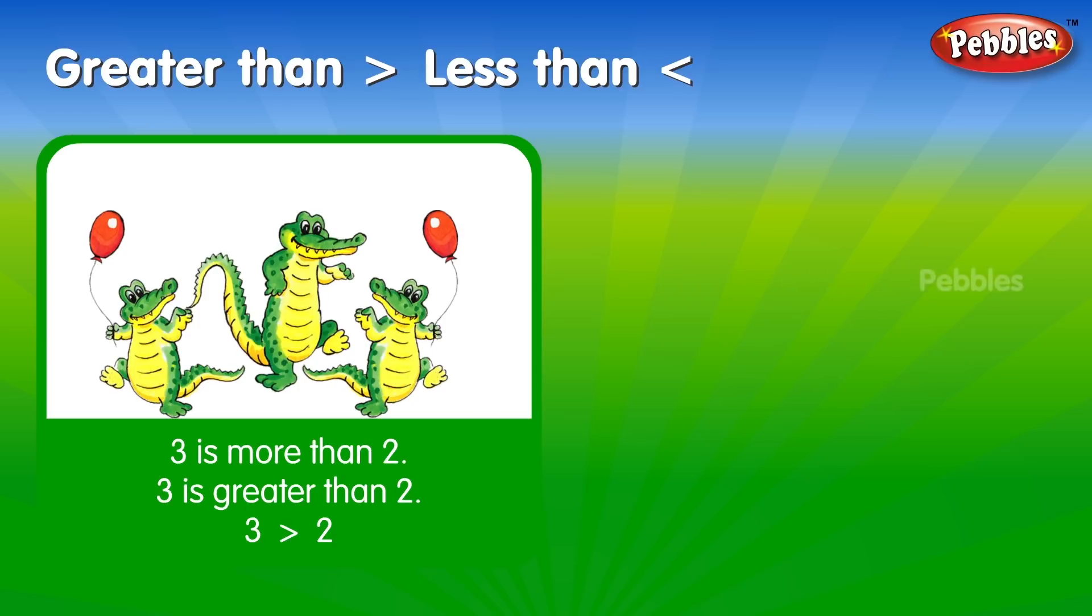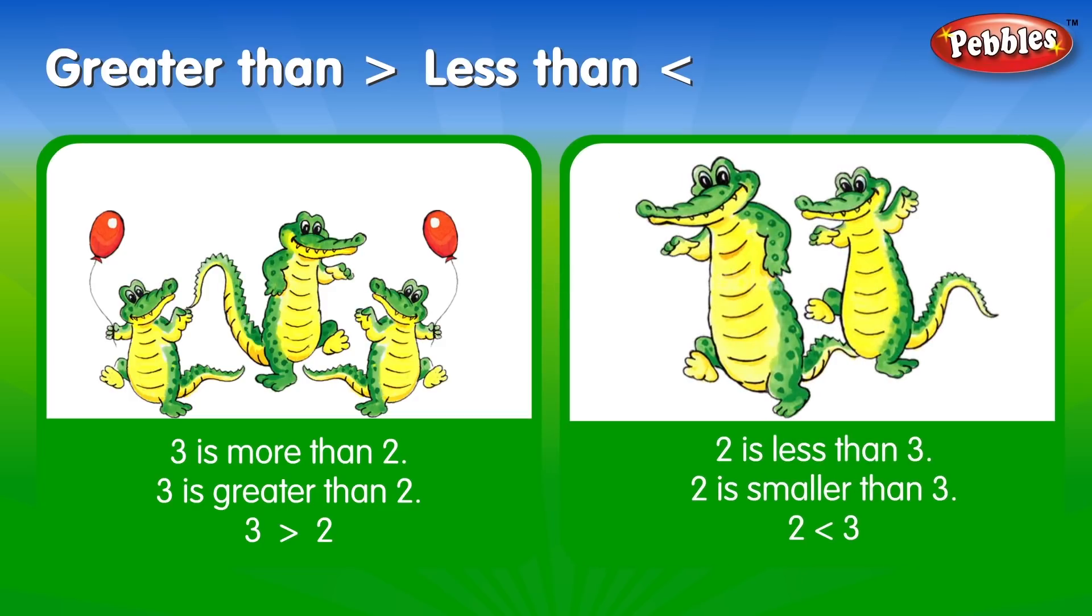Three is greater than two. Two is less than three. Two is smaller than three.